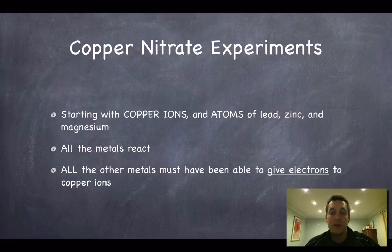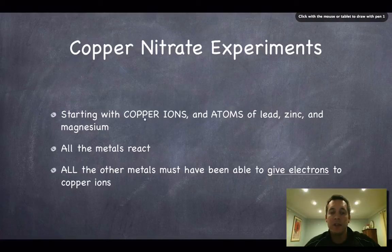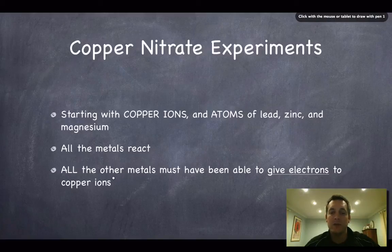To sum up the copper nitrate experiments: we started with copper ions and atoms of lead, zinc, and magnesium. All three metals reacted with the copper ions — every one of them was a good enough reducing agent to reduce copper ions. All three metals were able to give electrons to copper ions; if you gain electrons, you're being reduced, so all three metals were reducing copper ions.